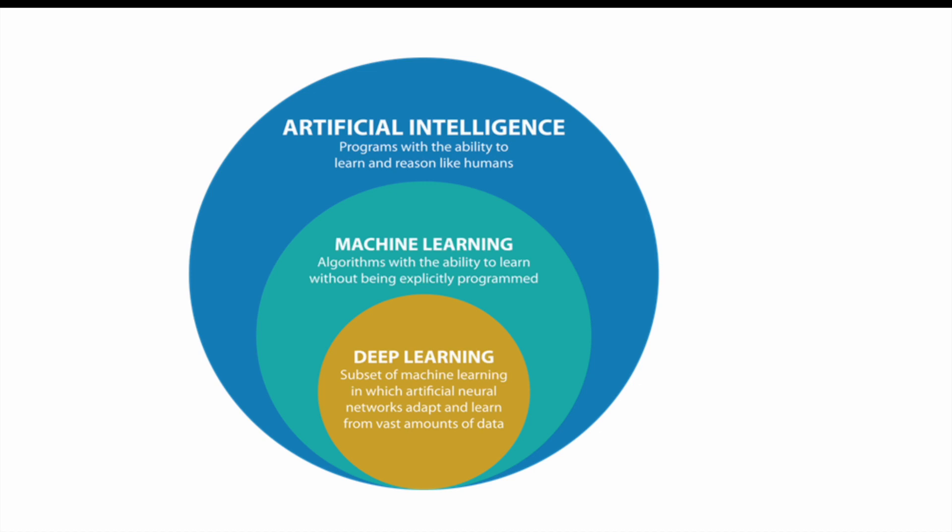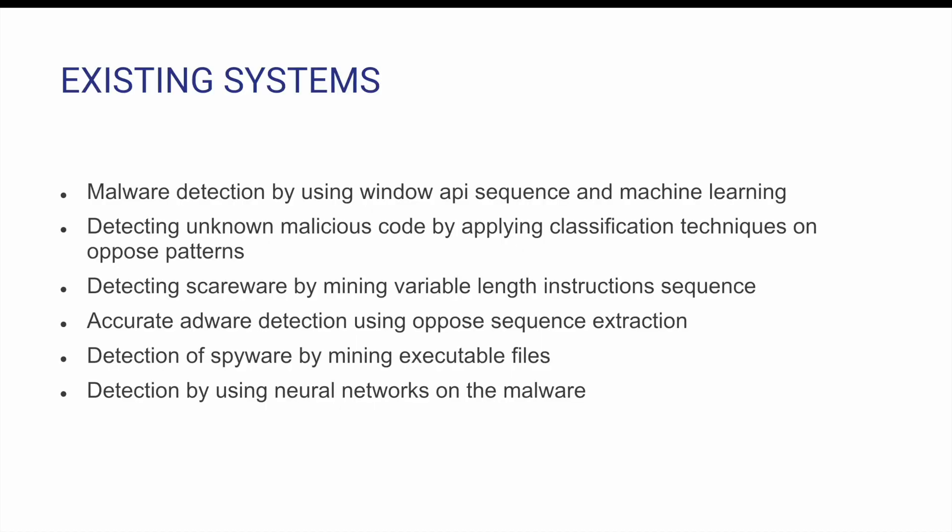The main hierarchy is: artificial intelligence, then machine learning, and then deep learning. I will not go too deep into this because it will take a lot of time — I want to give you an idea of how to make this project and how it works.